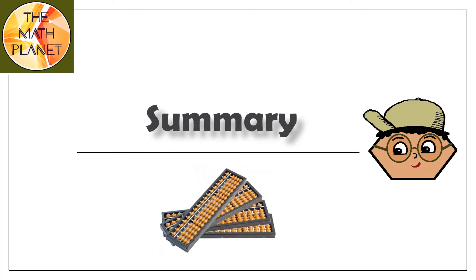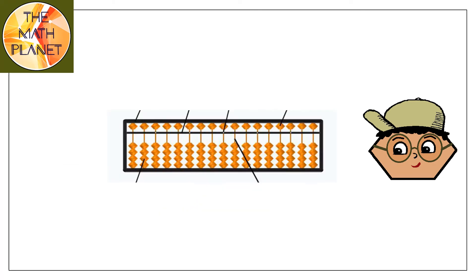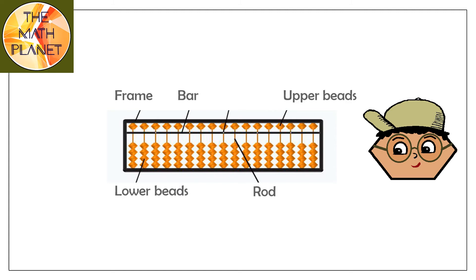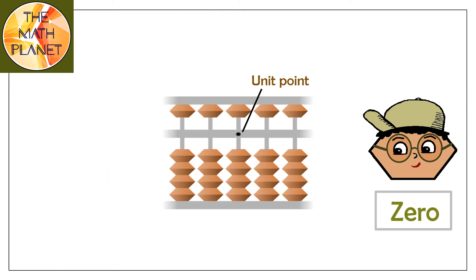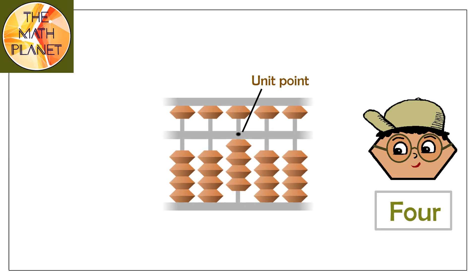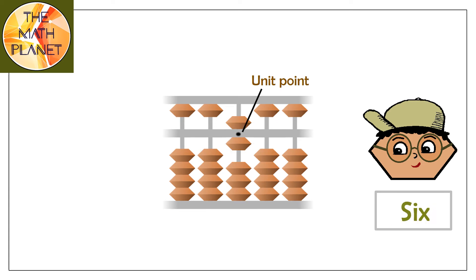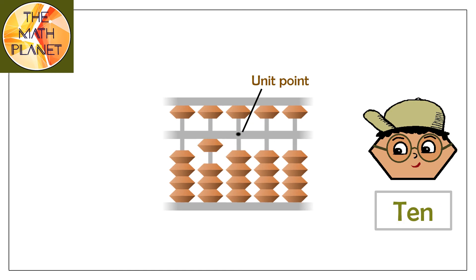Let's sum up today's lesson. The main parts of the abacus are the frame, the rods, the upper beads, the lower beads, the bar, and the points — the most important of which is the unit point, which is in the middle of the bar. This is how you represent 0, 1, 2, 3, 4, 5, 6, 7, 8, 9, and 10.